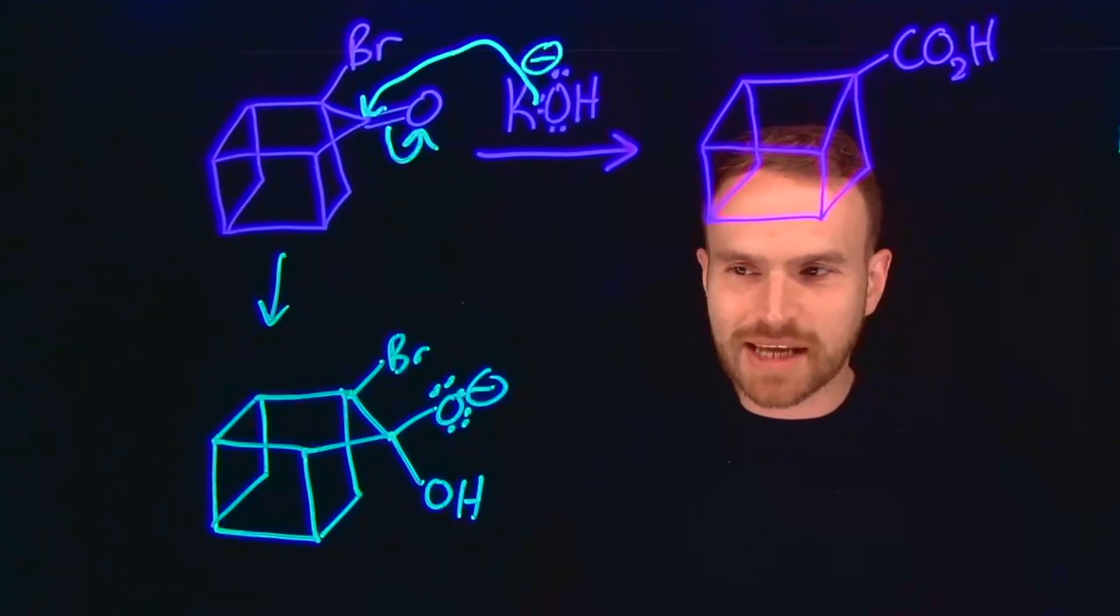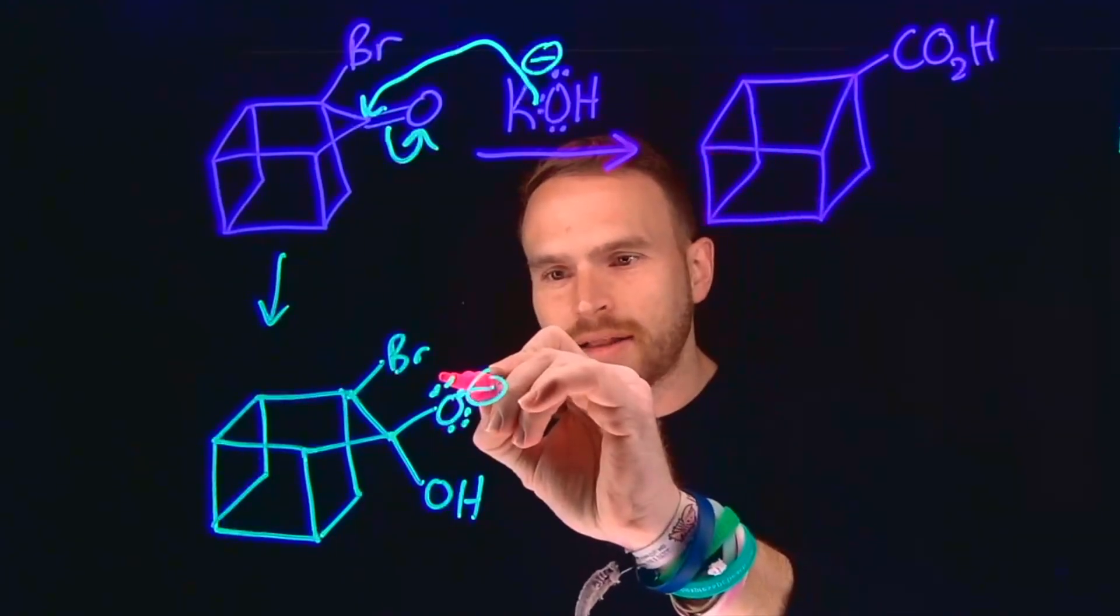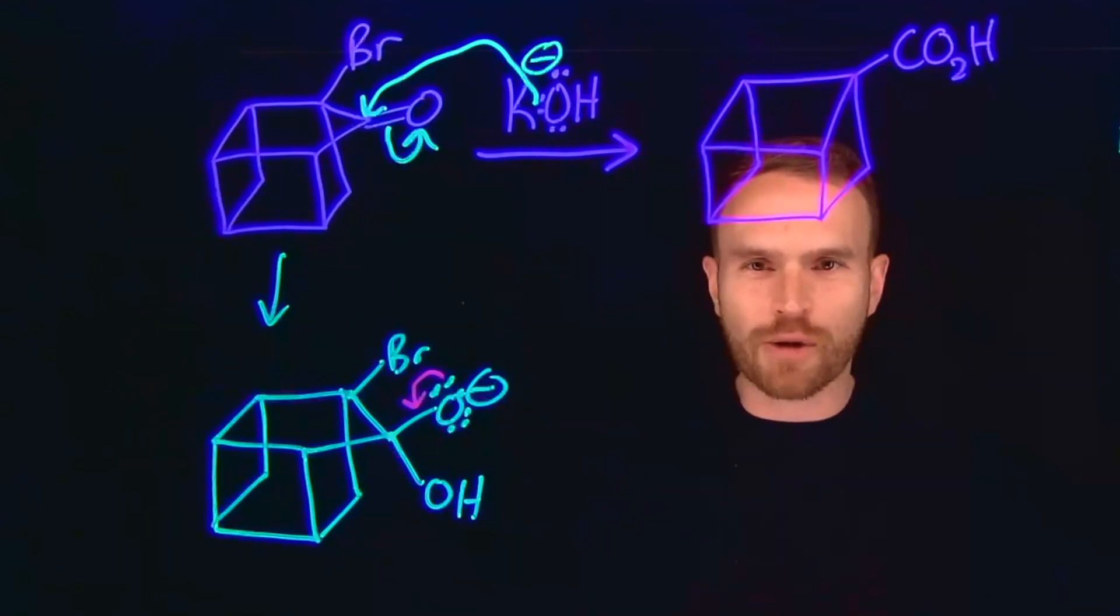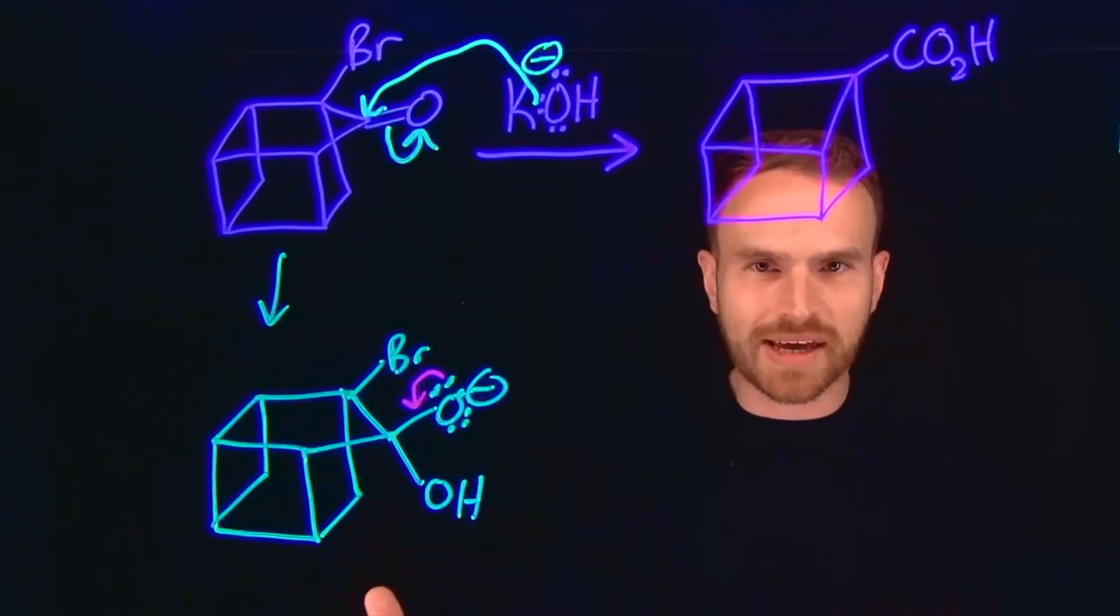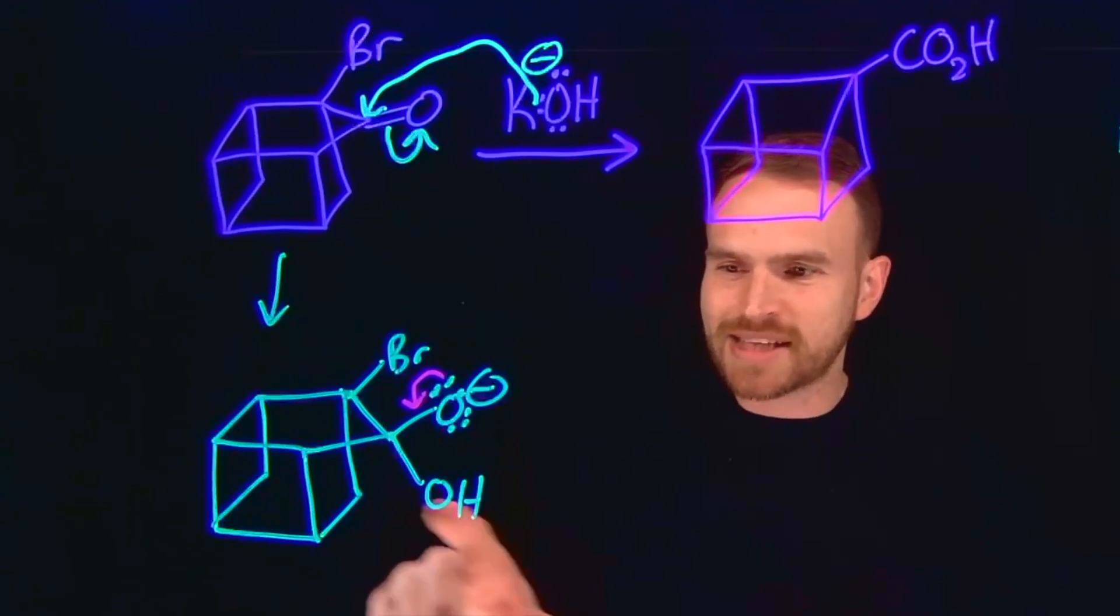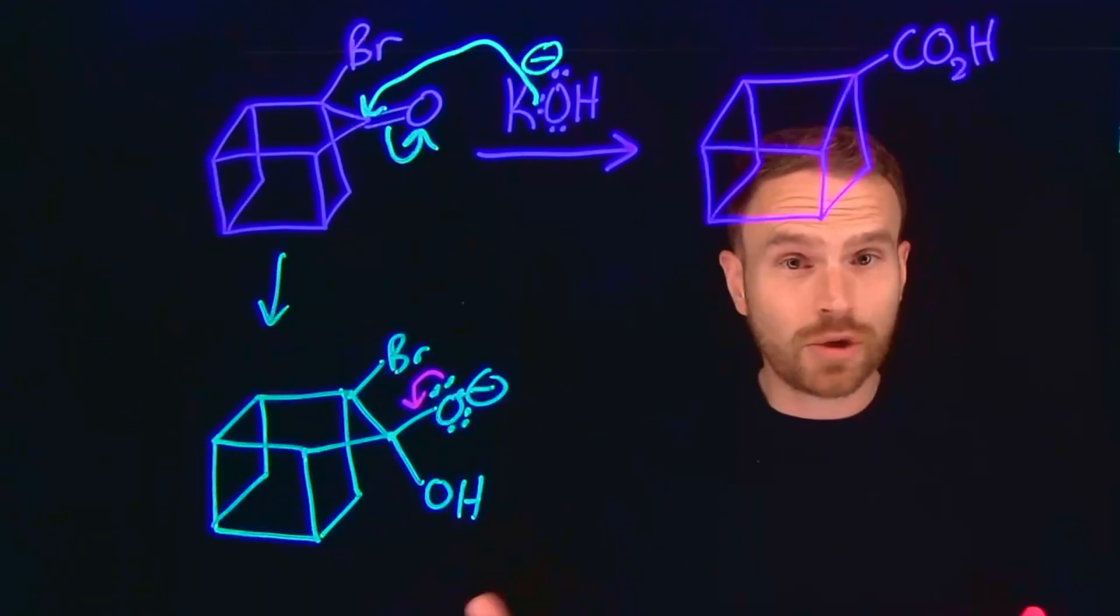Once we've arrived at this stage, these pi electrons are going to come down to reform that carbonyl carbon. But the productive pathway is not the one where the hydroxide would just be kicked off. That's not the most stable leaving group in this case. Instead, what's going to happen is that one of these carbon bonds is actually going to be liberated and opened up.